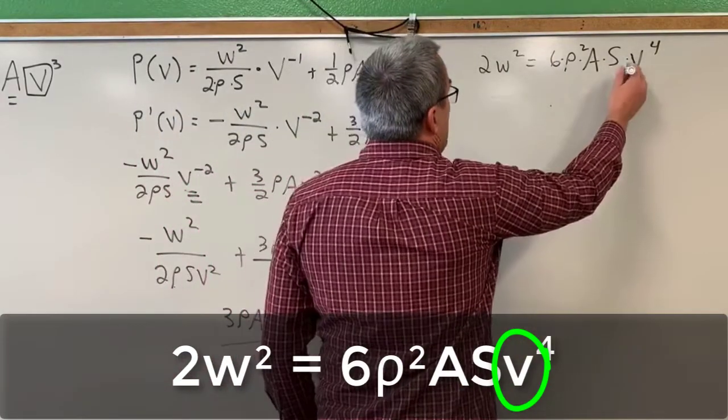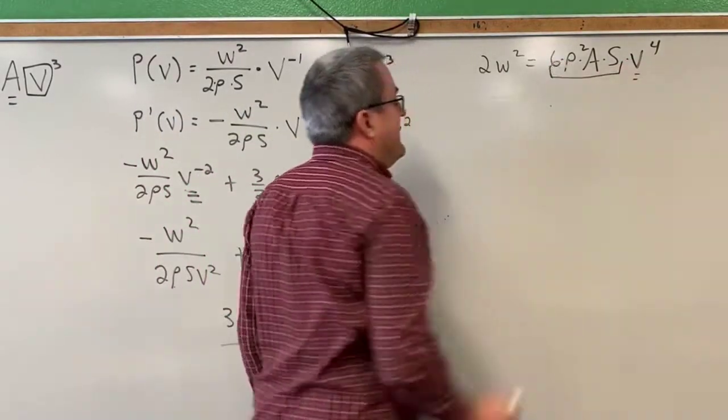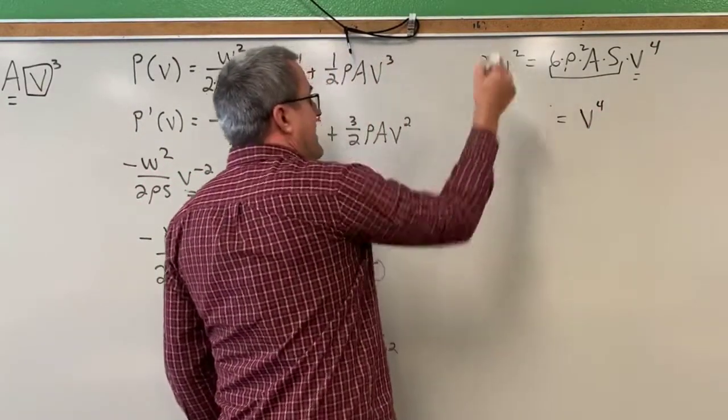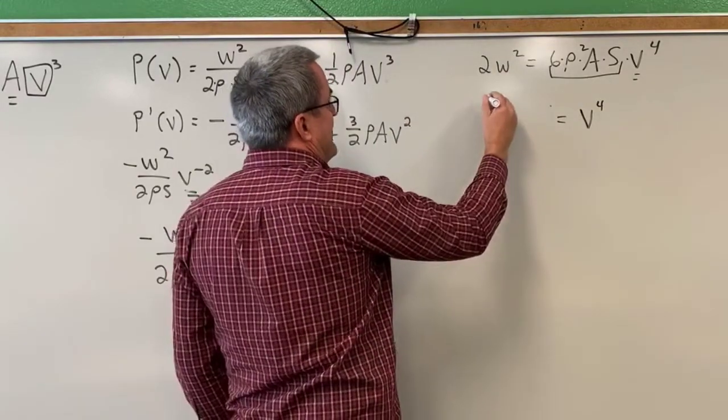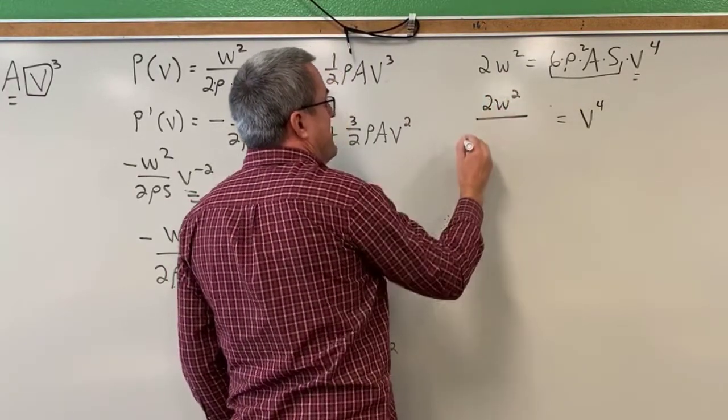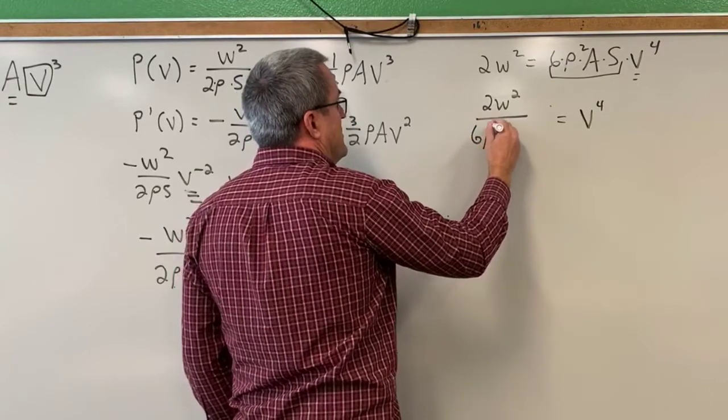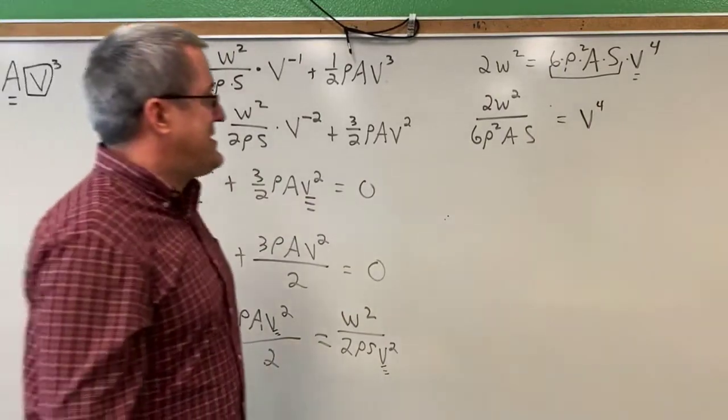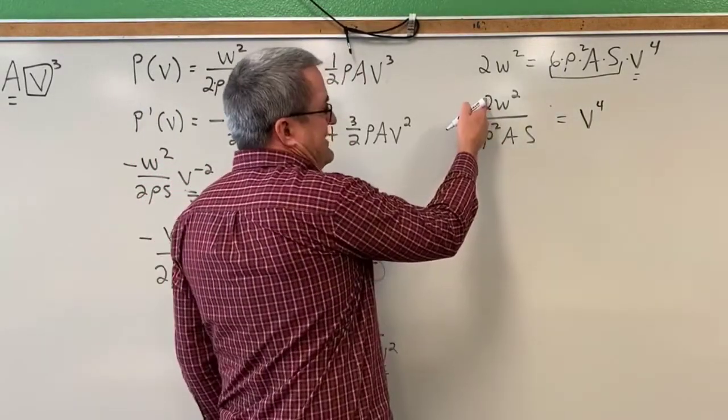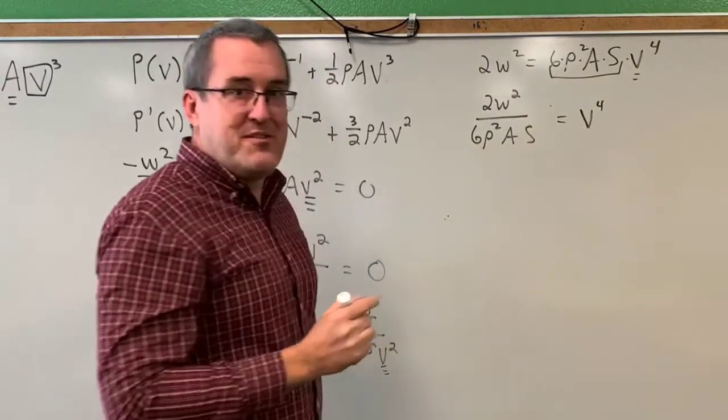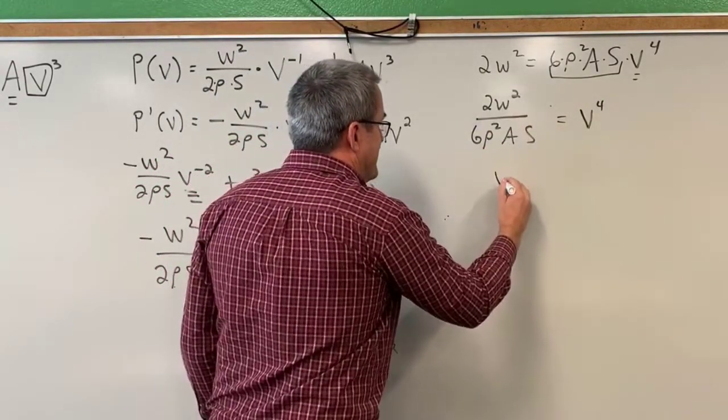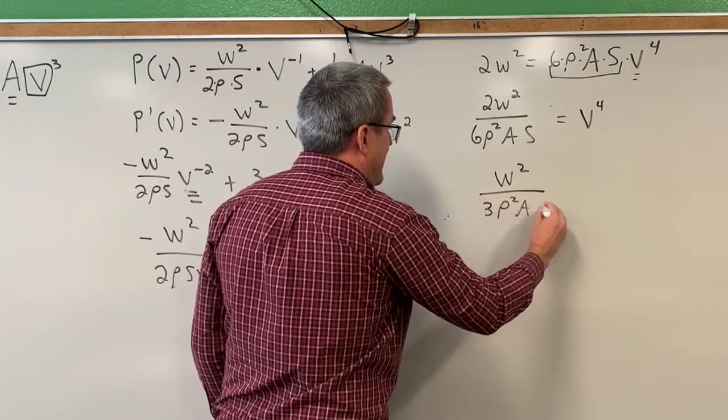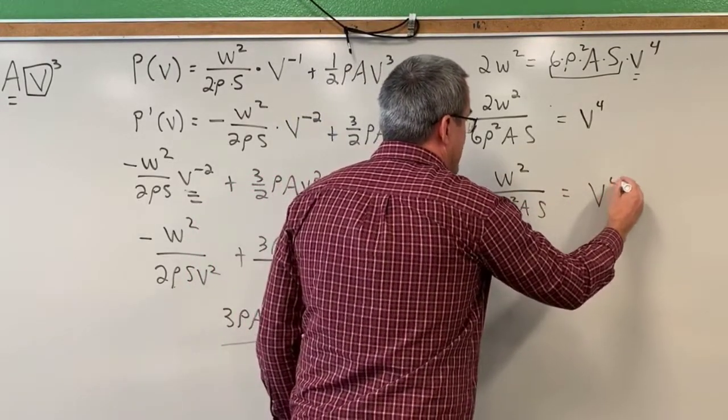So to solve for V, we can just divide by all those constants. So V to the fourth will equal, divide all those constants over to the left side. 2W squared divided by 6 rho squared A S. We're getting close. Let's just do a little simplifying here. Because 2 sixths can be simplified to 1 third. So let's simplify this and say, W squared over 3 rho squared A S is equal to V to the fourth power.